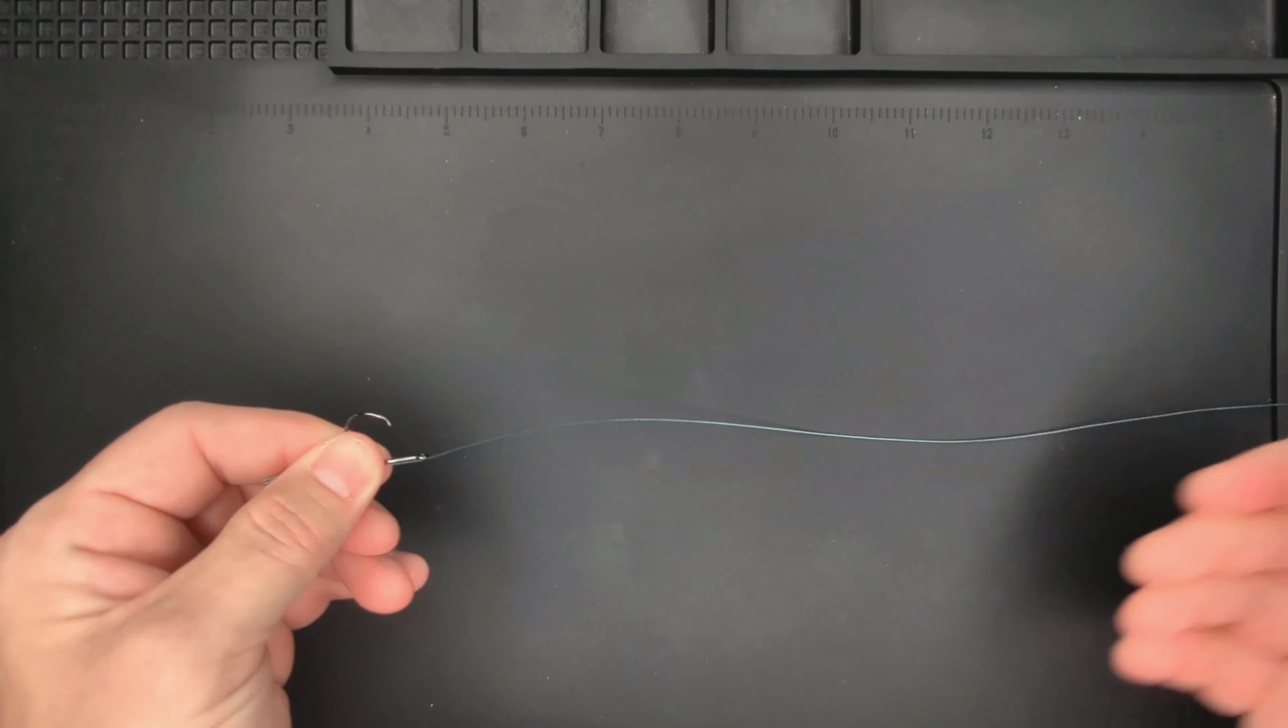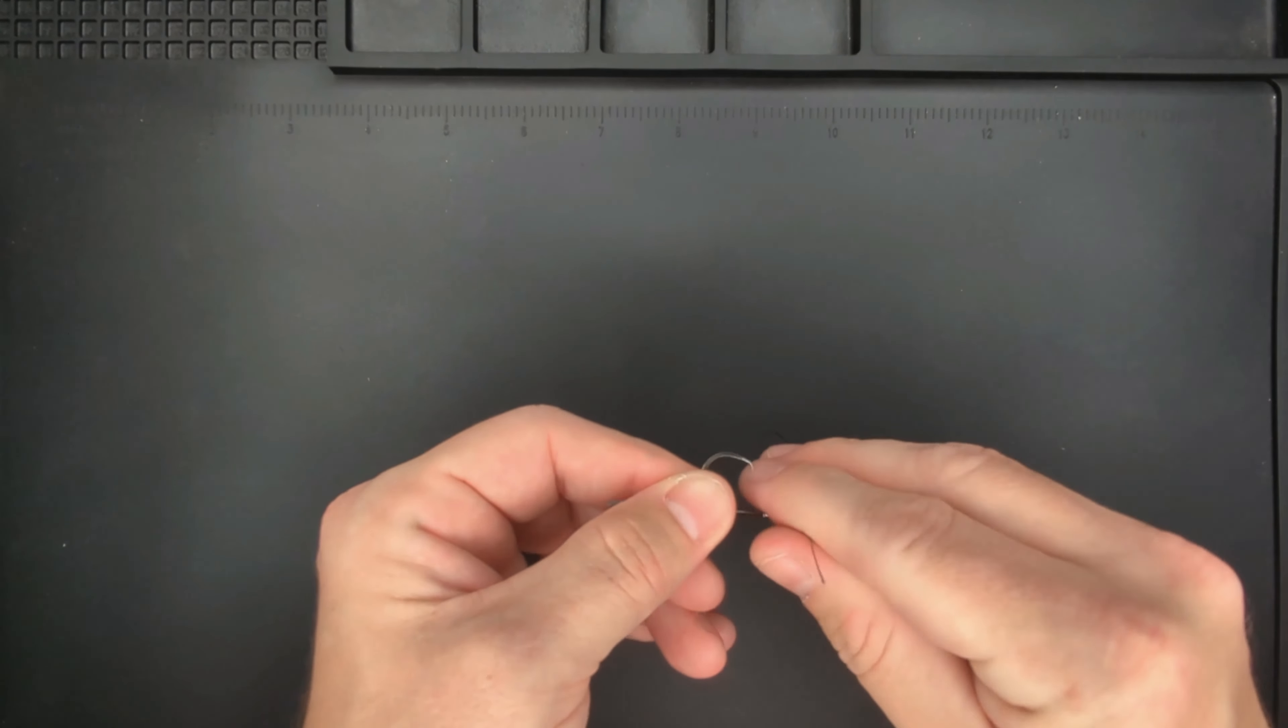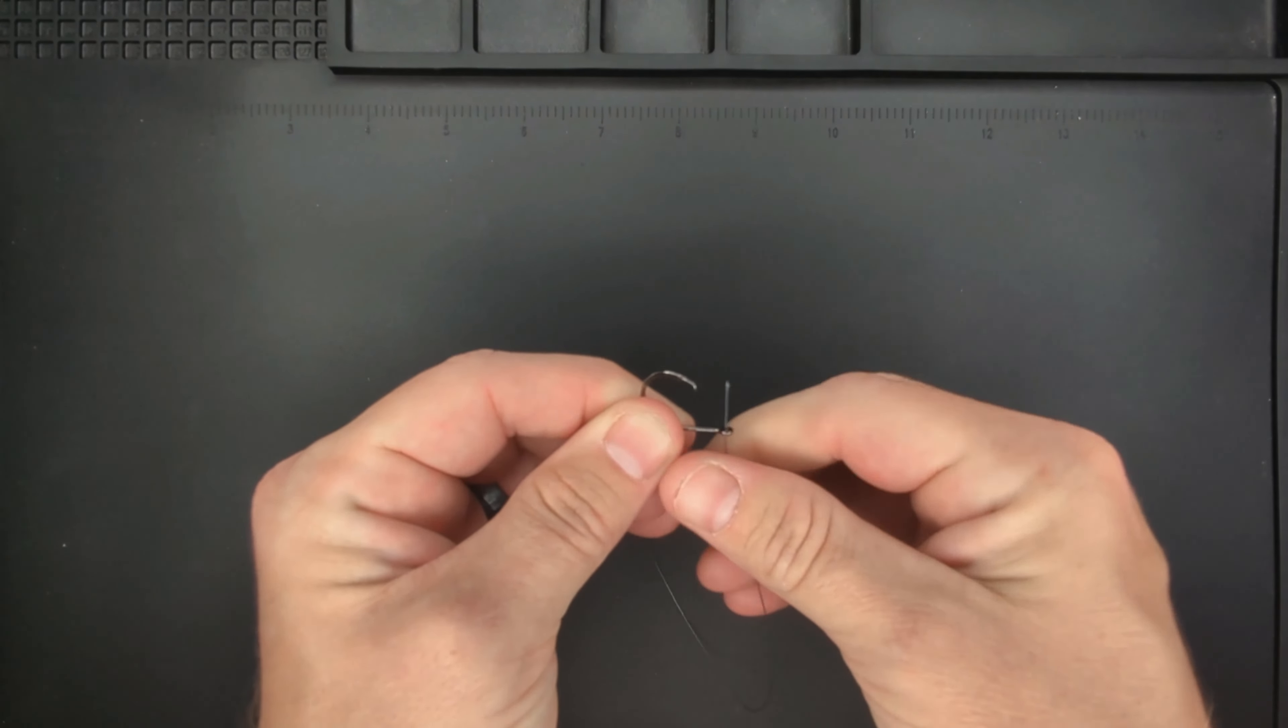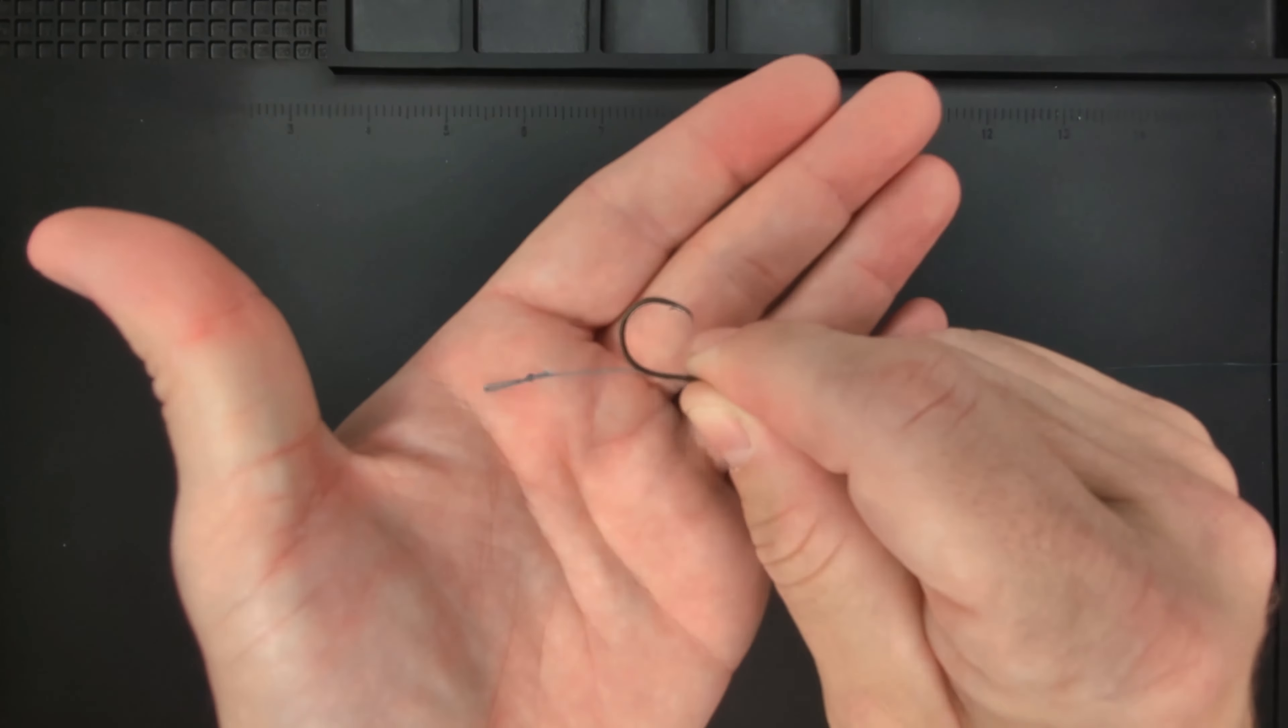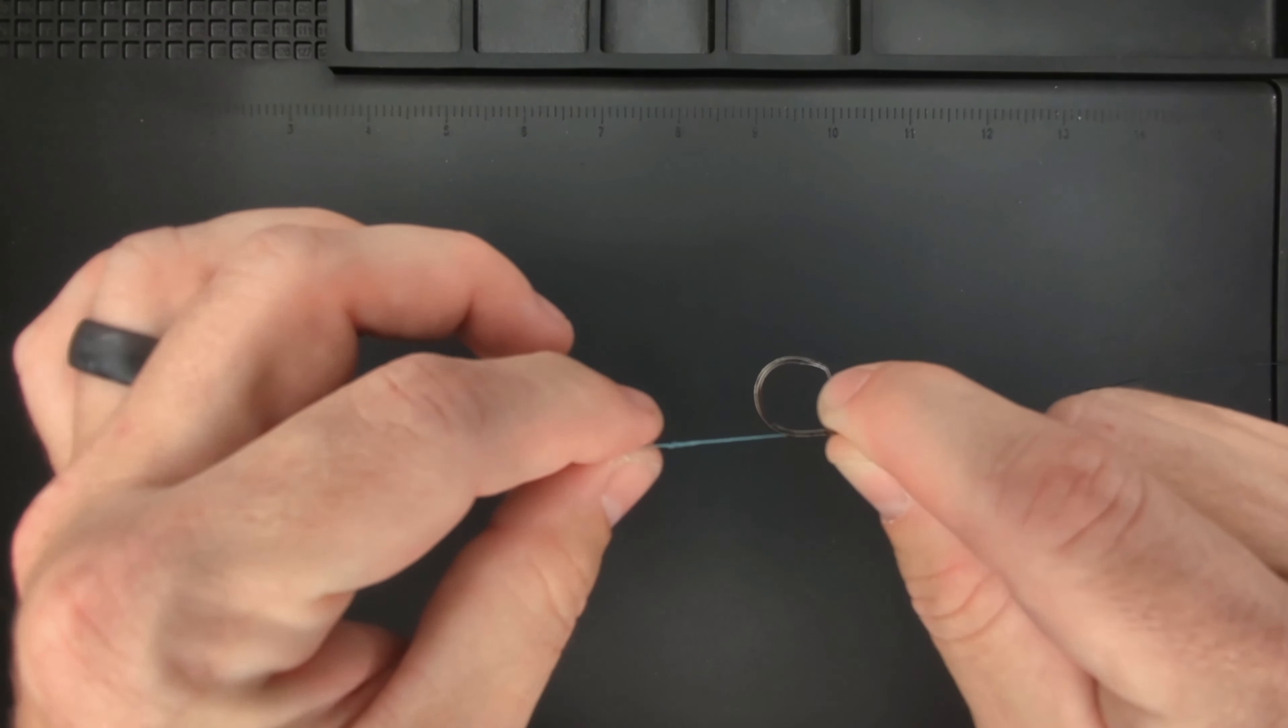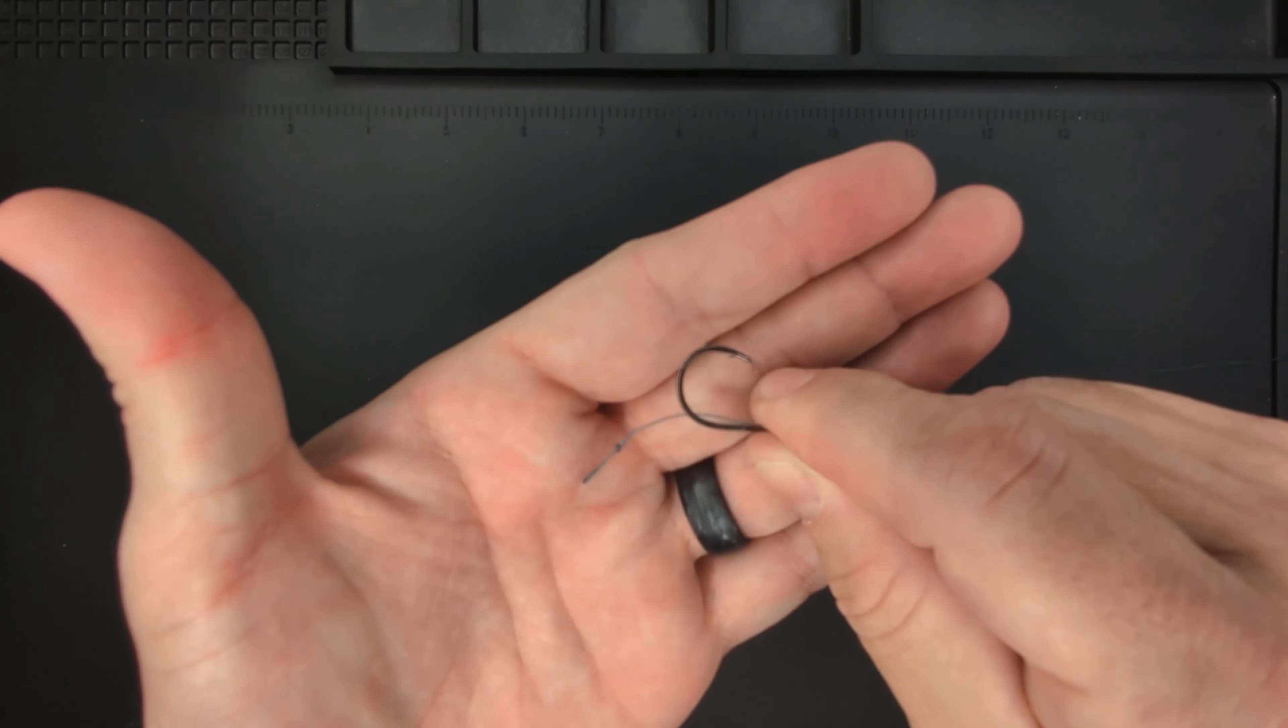What you want to do is take the opposite end from your loop. You want to go up through the bottom of the eye of the hook like so and measure out how much of your hair rig you want hanging off the end. Between one quarter and one half of an inch should be good.